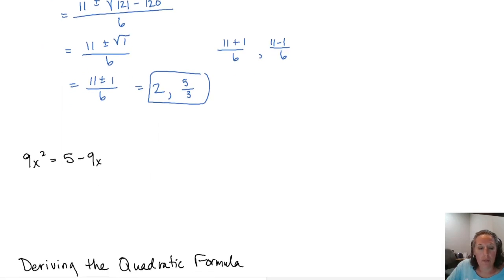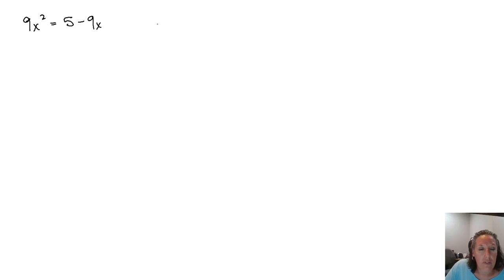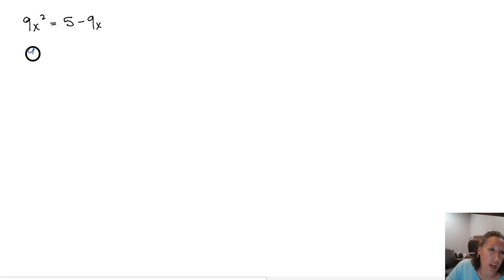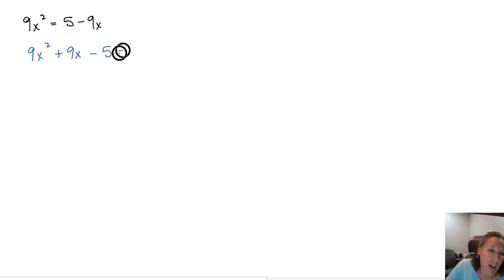Let's do one more. Our last example: 9x squared equals 5 minus 9x. In order to use the quadratic formula, we have to get everything on the same side of the equation equal to 0. It does not matter which direction you go, but I like having my a be a positive number, so I'm going to move it all to the left. So 9x squared: when we move the negative 9x from the right we add 9x, giving a positive 9x. And when we move the 5 to the other side we get a negative 5.